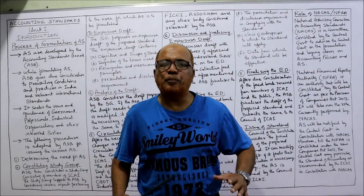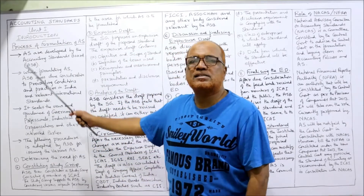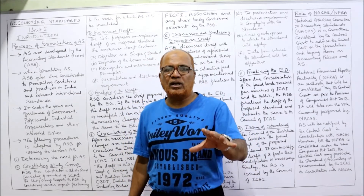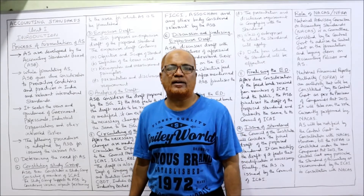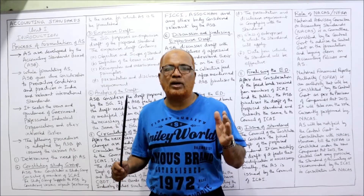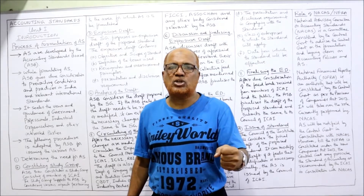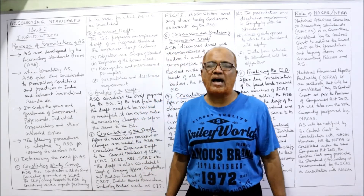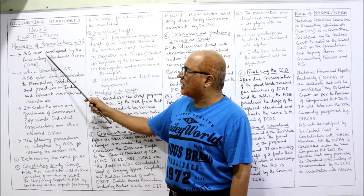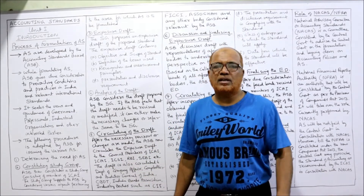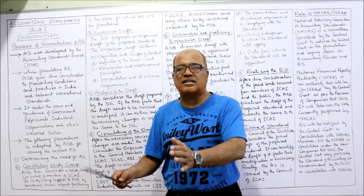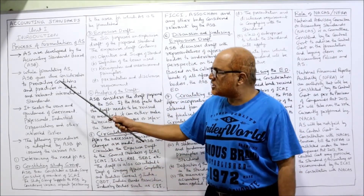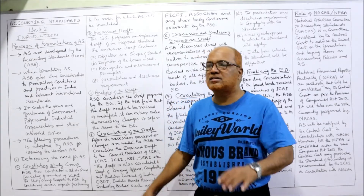Now I'm going to start the process of formulation of accounting standard. Accounting standards are issued and prepared by the ASB — Accounting Standard Board — a body constituted by ICAI, the Institute of Chartered Accountants of India, the highest professional body in India to regulate, control, and make research on accounting. ICAI has constituted this board named the Accounting Standard Board. The responsibility of making accounting standards has been entrusted by ICAI to ASB.